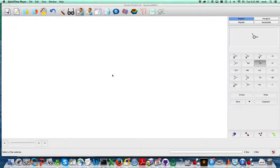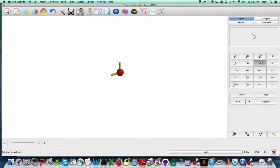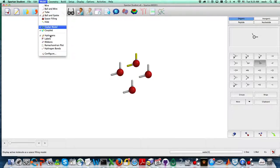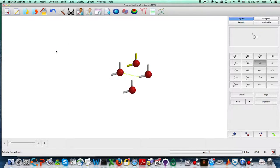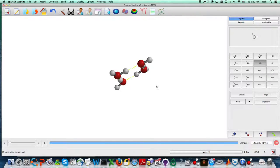So Leslie, this is what I was talking about. I'm in Spartan here and this is water. You just double-click a bunch of places, then go to Model and say I want to see hydrogen bonds. Then you hit the minimize button, which moves it into some configuration.